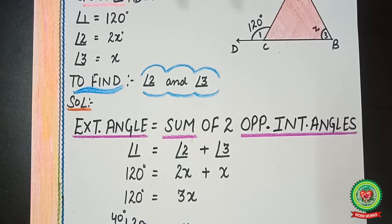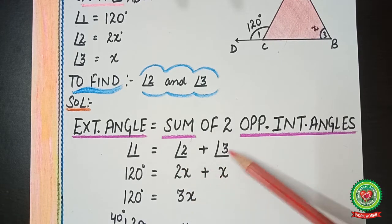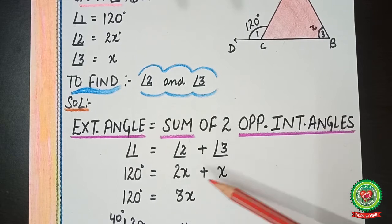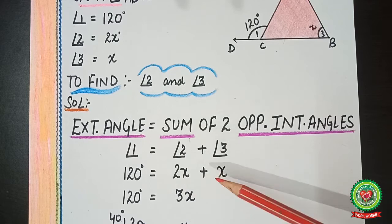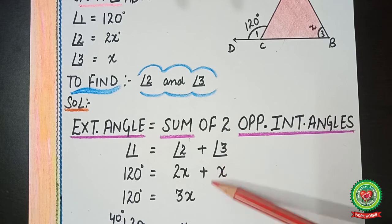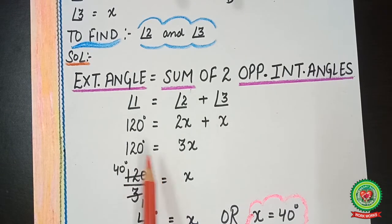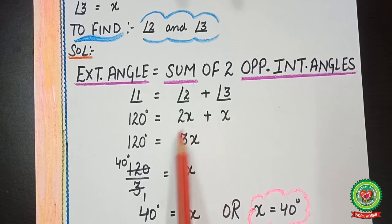We combined 2x and x as like terms — they are like terms because both have the same variable x. The coefficient of x alone is 1, so 2 + 1 = 3, giving us 3x. Therefore 120° = 3x.